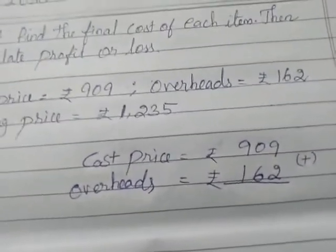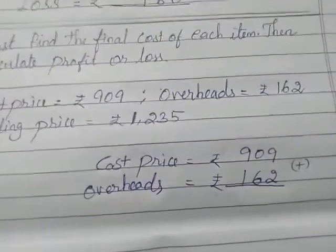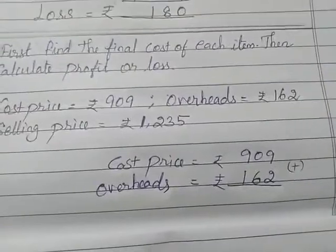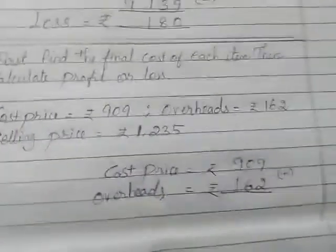So now we are going to find final cost price. So how will you find final cost price? If you add cost price and overheads, you will get final cost price.